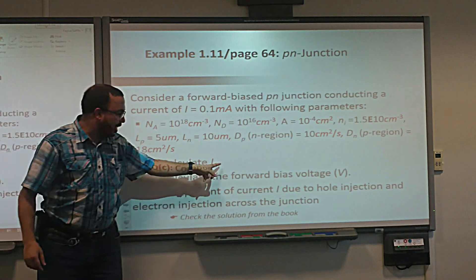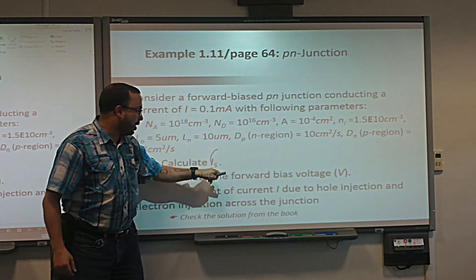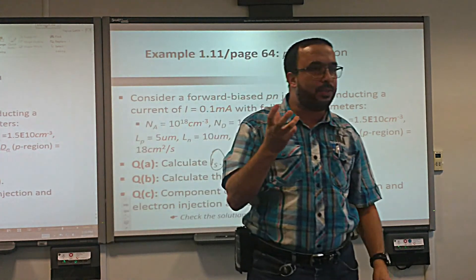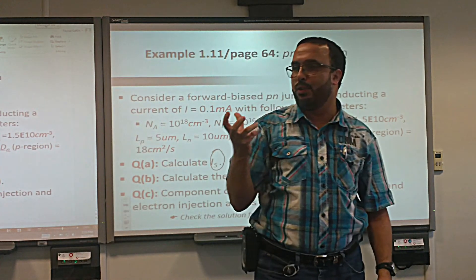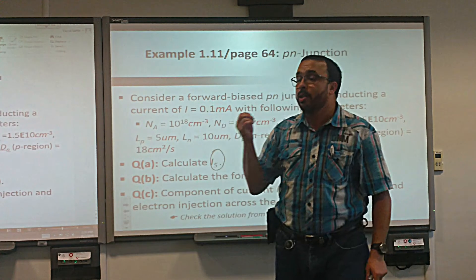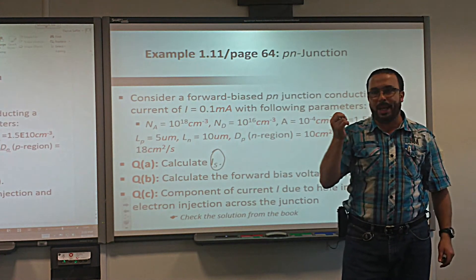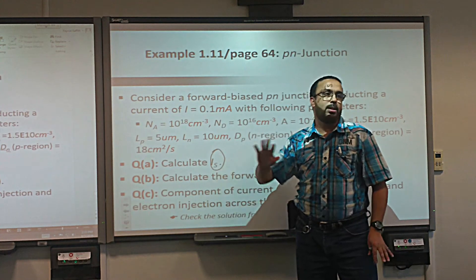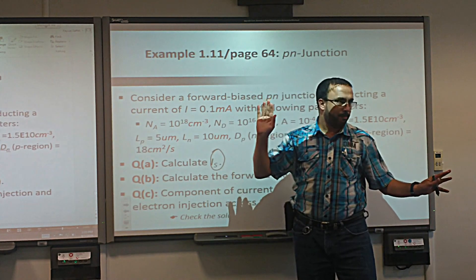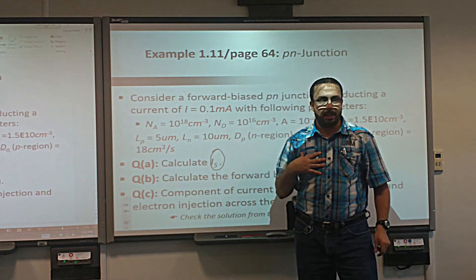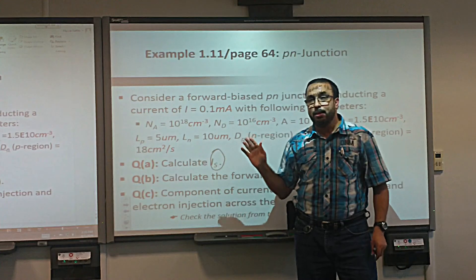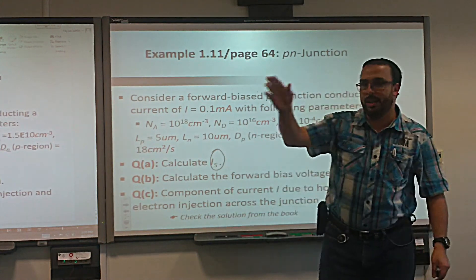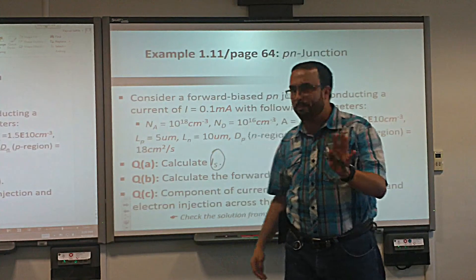What is I_S? Saturation current. What is the nature of this current — is it drift or diffusion? It's drift. So the nature is drift current, but the name is saturation current. Like us — we are humans by nature, but each of us has a name. Very important distinction.